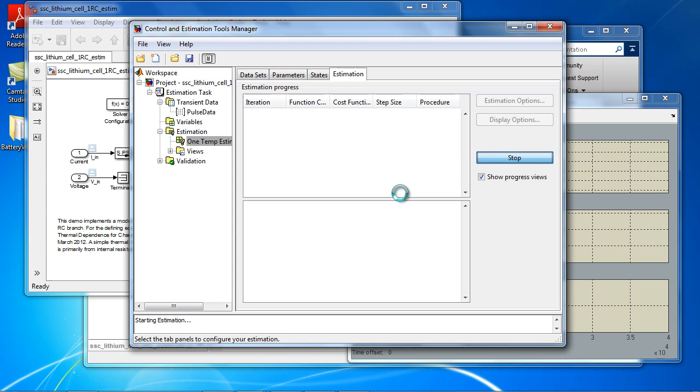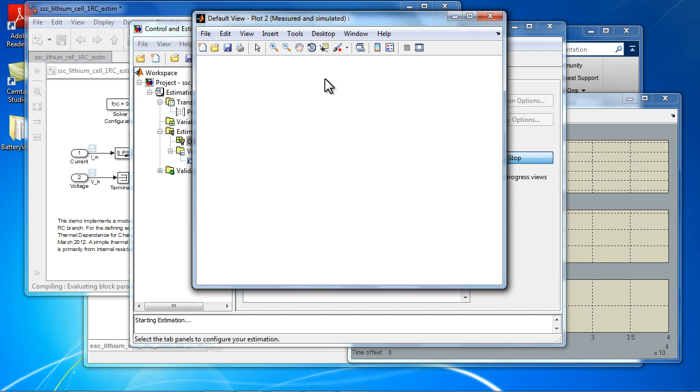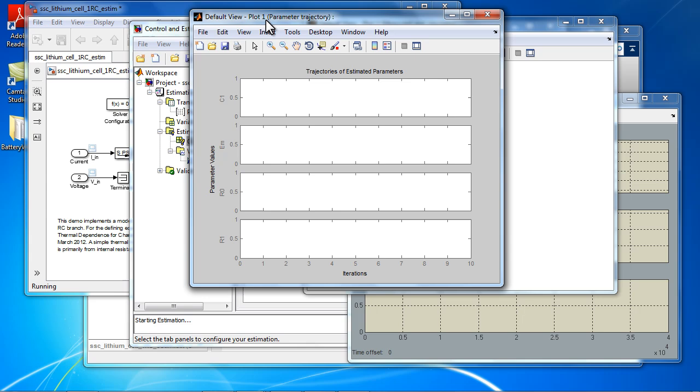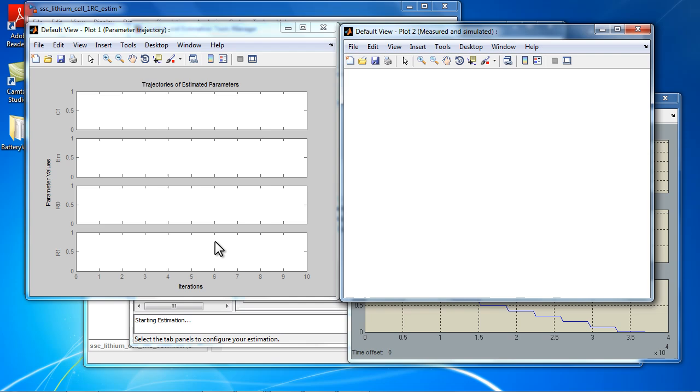So I'm just going to start this. It takes a few minutes, so I'm not going to run through the whole thing, but this is how you would perform the battery estimation. You can see in the background that it's actually running the model, comparing the error between the measured and simulated values. And if we watch this progress, you would see the parameter trajectories as well as the change in the measured versus simulated result.